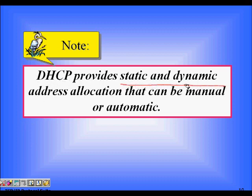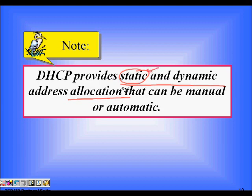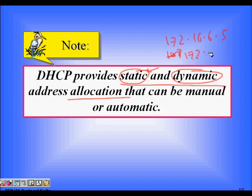DHCP provides both static and dynamic address allocation, which can be manual or automatic. When a computer comes up, an IP address is allocated by the DHCP server. In static allocation, a known MAC address is always assigned the same IP address. In dynamic allocation, the same computer might be assigned 172.16.6.5 one time and 172.16.6.8 the next time it boots up. Manual allocation may lead to conflicts, while automatic allocation avoids them.